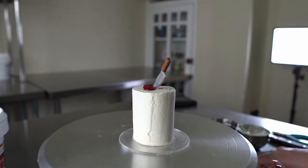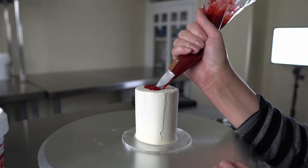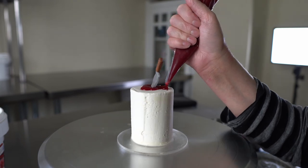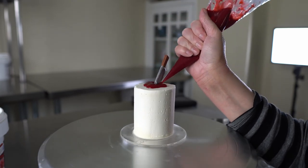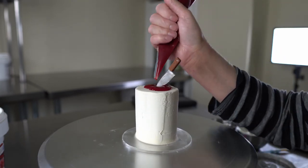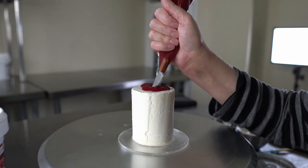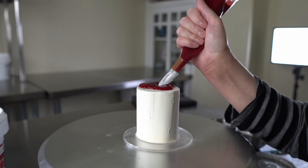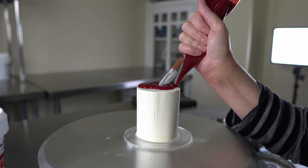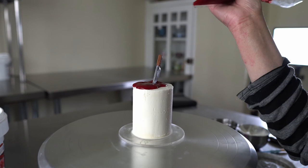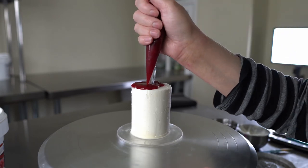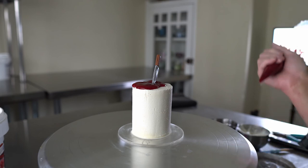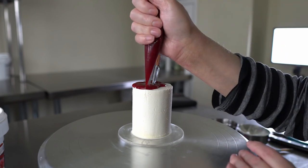I want to do a drip down the side, but I don't want it to go all over the place, so I'm going to go ahead and fill around my knife and then out to the edge.